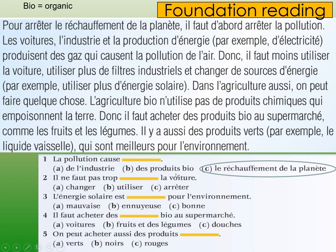Without even needing to look at the text, you can work that one out. Looking up here, I can see: in order to stop global warming, you must stop pollution — so those two go hand in hand. Number two: 'il ne faut pas trop [something] la voiture'. Cars, industry, production of energy — they produce gas and cause air pollution. So you must not use — 'utiliser' — the car too much. Number three: solar energy is something for the environment. Looking at the options, I'm going to guess it would be 'good' — 'bonne' — because it's giving a suggestion that you should be using it.